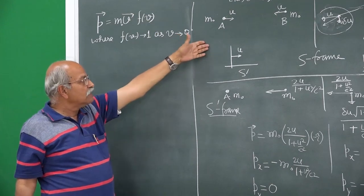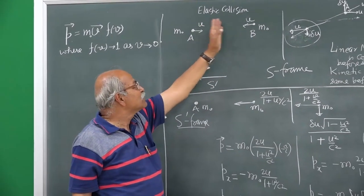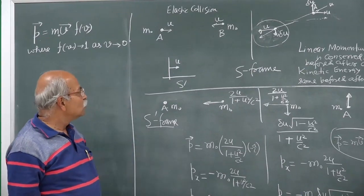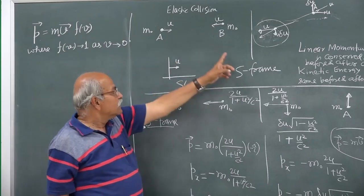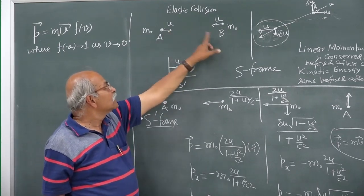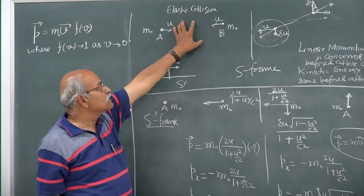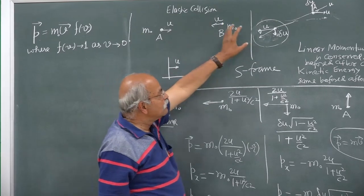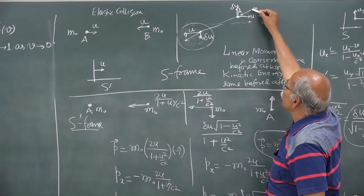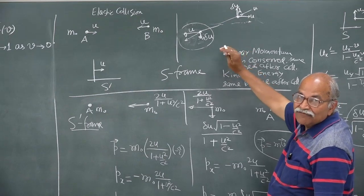We come to the same example: two particles of equal rest mass m naught going in opposite directions with the same speed u collide and go their way. Looking at the new definition of linear momentum in the S frame, this momentum and this momentum are both multiplied by the same factor f(u), since the speed is u for both. So the total linear momentum is still 0 before and after — the conservation law holds in S frame.